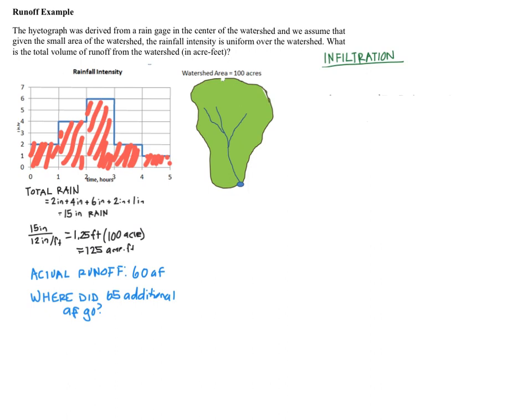If you're paying attention and you know that this module is about infiltration, you can probably guess that the rest of that water, that 65 acre feet, was lost to infiltration. But what exactly is infiltration? I'm going to define it a couple of ways. So first, we can define infiltration as the process by which water on the ground surface enters the soil. So it's a flux of water from the ground surface into the soil.